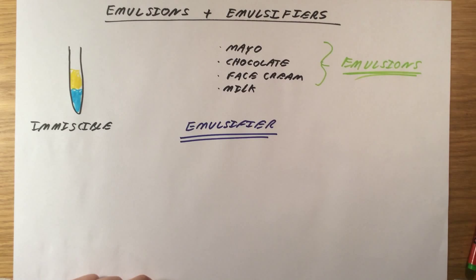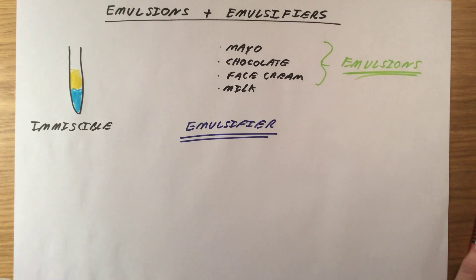Emulsifiers are molecules or chemicals that allow water and oils to mix together. They cause them to become miscible or mix up.